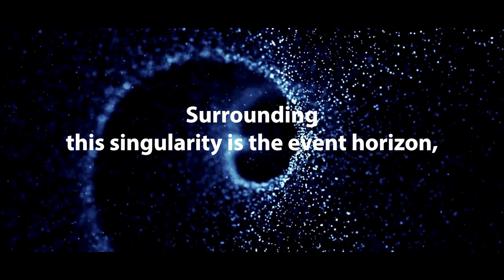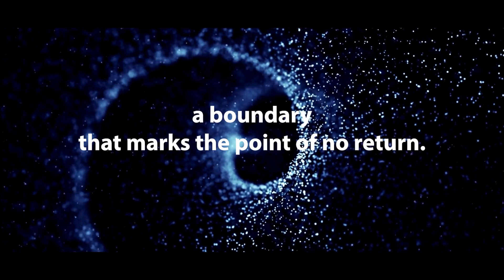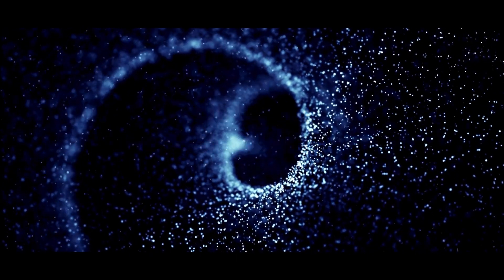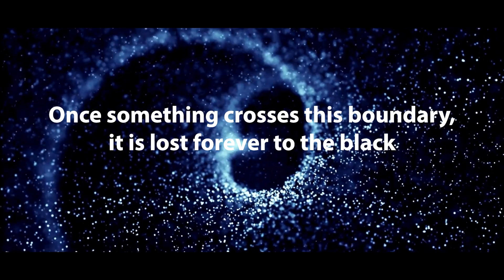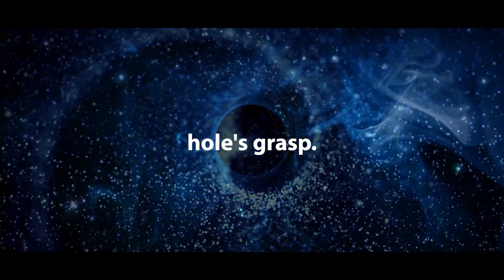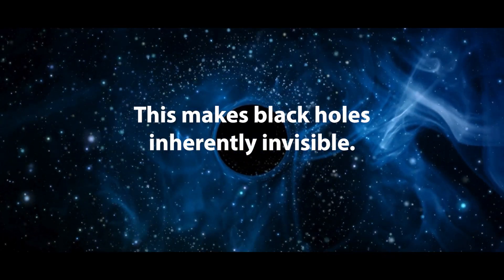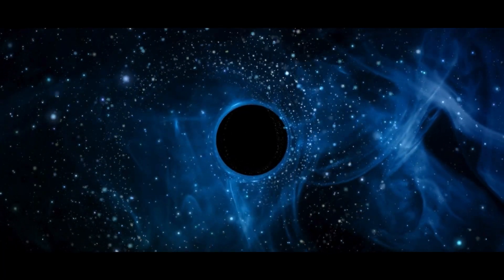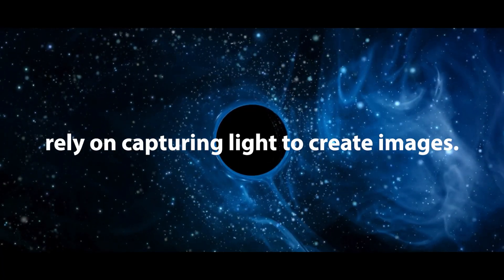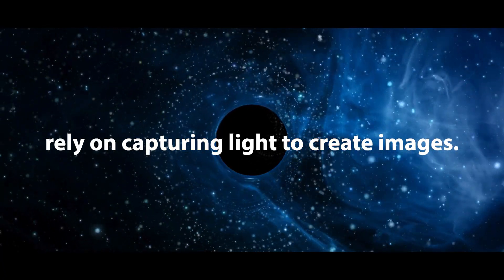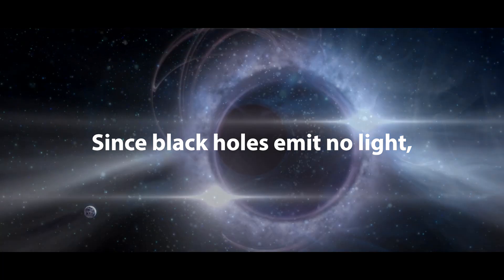Surrounding this singularity is the Event Horizon, a boundary that marks the point of no return. Once something crosses this boundary, it is lost forever to the black hole's grasp. This makes black holes inherently invisible. Telescopes, whether optical, infrared or even gamma ray, rely on capturing light to create images. Since black holes emit no light, they remain hidden from direct observation.